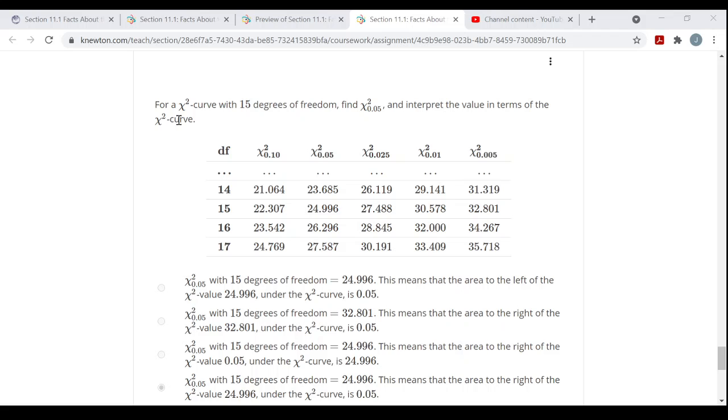Say we're getting: for a chi-square curve with 15 degrees of freedom, find chi-square 0.05 and interpret the value in terms of the chi-square curve. All this means is what's the value on the number line that has an area of 5% to the right of it?